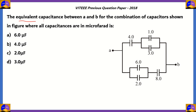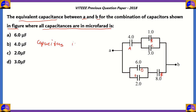We have another question. The equivalent capacitance between A and B for the combination of capacitors shown in the figure, where all capacitances are in microfarads, is — is it 6, 4, 2, or 3 microfarads? We can start by naming our capacitors so we can make transformations to the circuit. Capacitor A, capacitor B, capacitor C with 3 microfarads, capacitor D with 6 microfarads, capacitor E with 2 microfarads, and capacitor F with 8 microfarads. Now, how do we solve questions when you have a range of capacitances in a circuit? We have two methodologies: one is to identify capacitors in series and one is to identify capacitors in parallel.